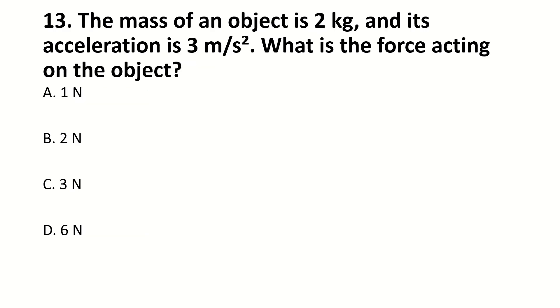The mass of an object is 2 kg and acceleration is 3 meter per second square. What is the force acting on the object? So simple, F is equal to ma. F equals ma. This is 2 into 3. So it is 6 Newton.